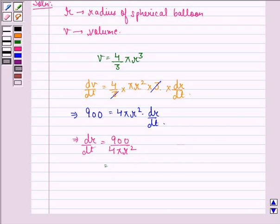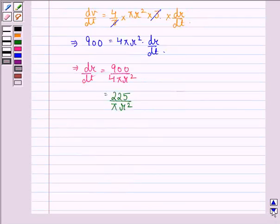That equals 225/(πR²). Therefore, dr/dt at r = 15 cm is equal to 225/(π × 15²).